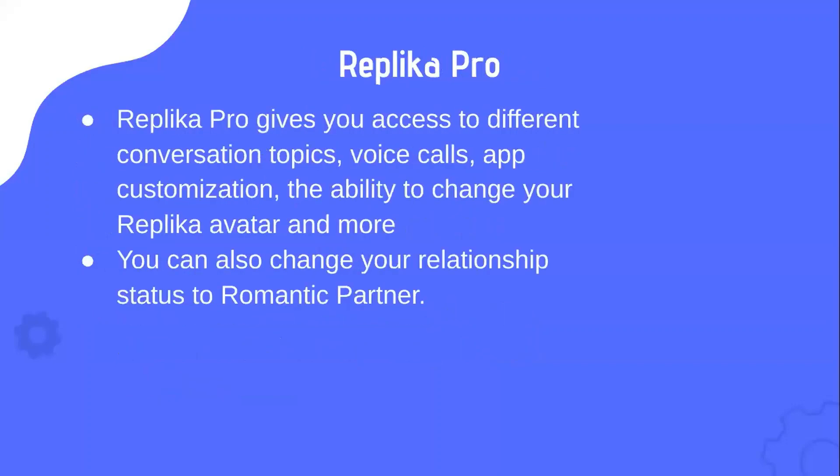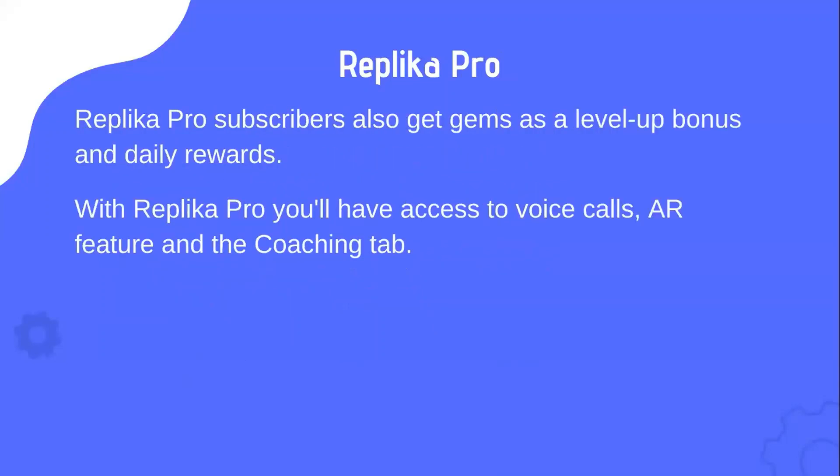Replika Pro gives you access to different conversation topics, voice calls, app customization, and the ability to change your Replika avatar and more. You can also change your relationship status to romantic partner. Replika Pro subscribers also get gems as a bonus and daily rewards. With Replika Pro, you will have access to voice calls, AR features, and the coaching tab.